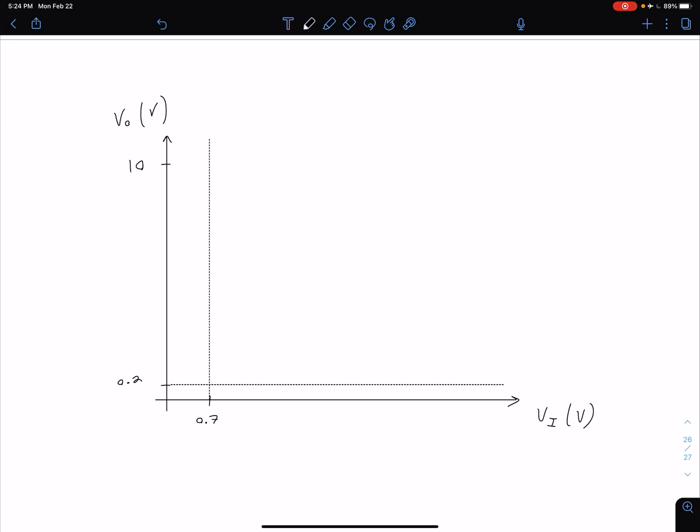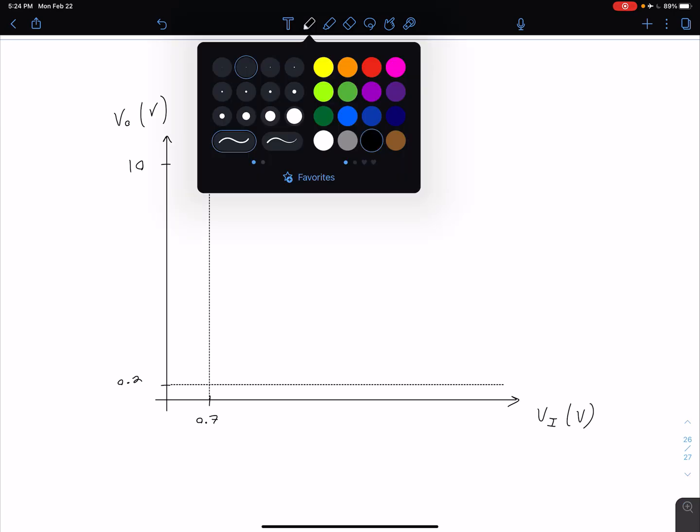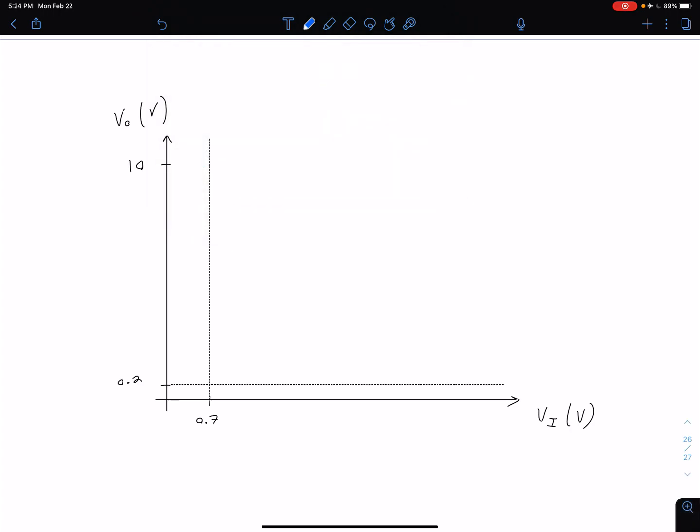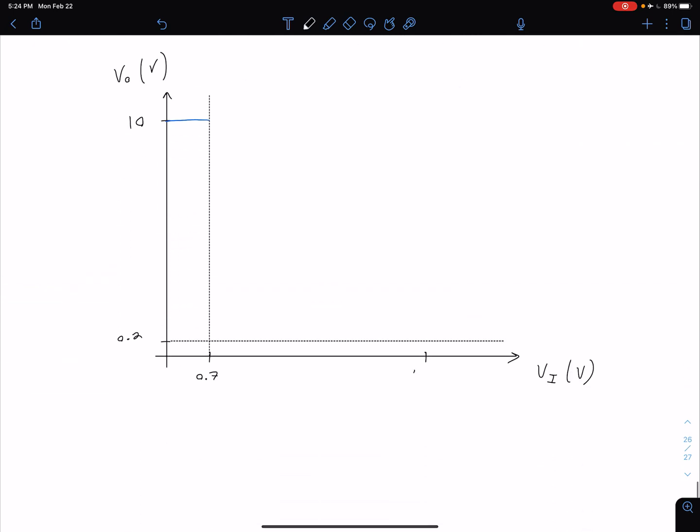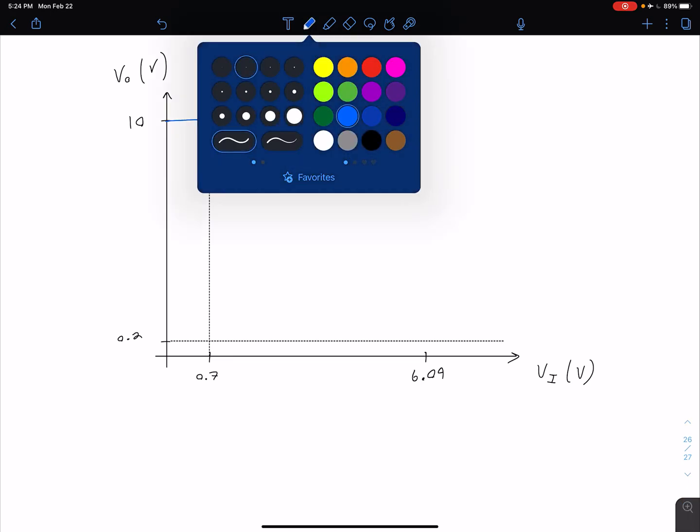What we can do is we said for small input voltages our output is 10. Once we get above 0.7 we know we're going to be in forward active and our output voltage is going to be decreasing up until we get to this point of saturation. We know now that that voltage where we reach that is 6.09. So at 6.09 we know we're going to be in saturation.